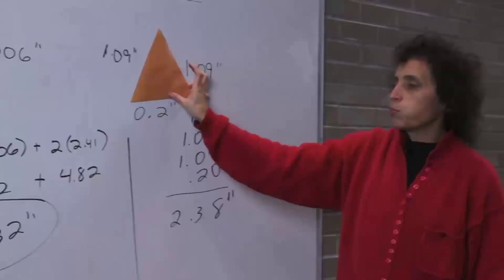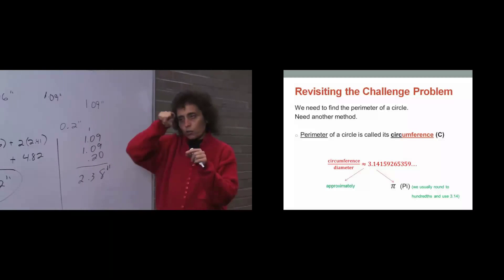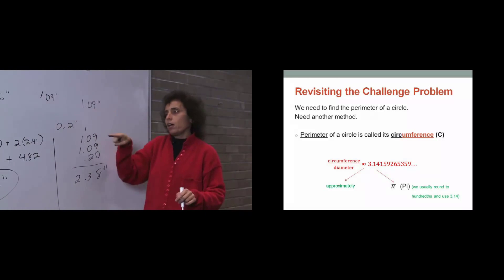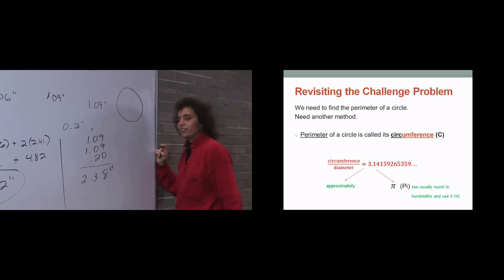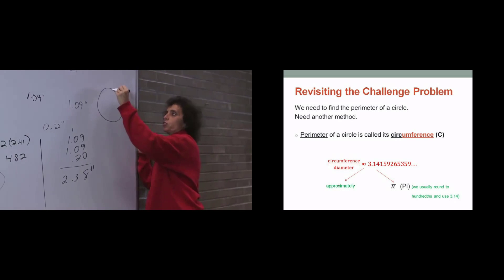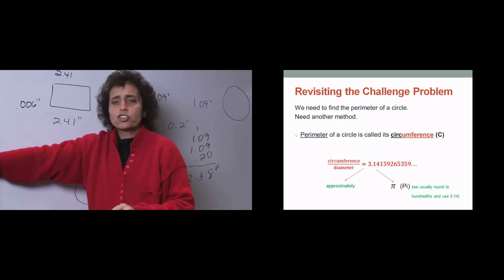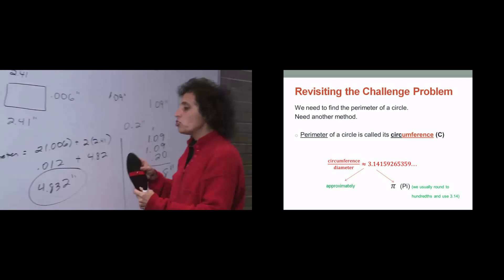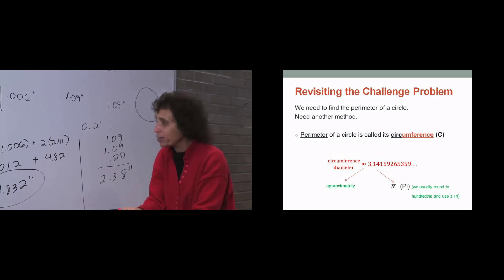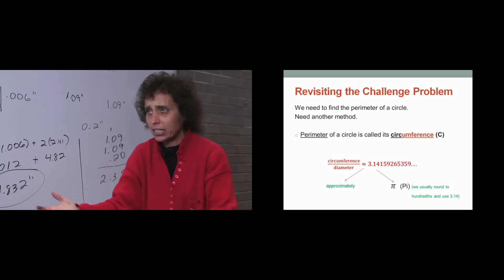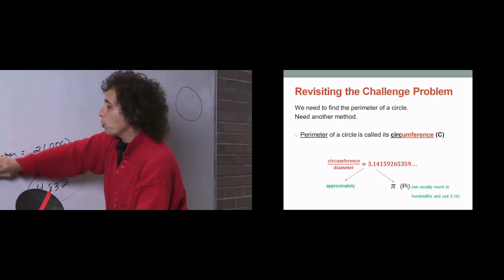We have a little problem. Remember our question — the Mormons took a rag and tied it around the wheel, and they wanted to make one complete revolution of the circle. So what they want is the perimeter of the circle. Actually, in a circle we don't call it perimeter — we actually call it circumference. But notice the big problem we have with a circle: where are the sides? How am I going to add up all the sides if there are no sides? So we're going to have to get a formula for the circumference of a circle.